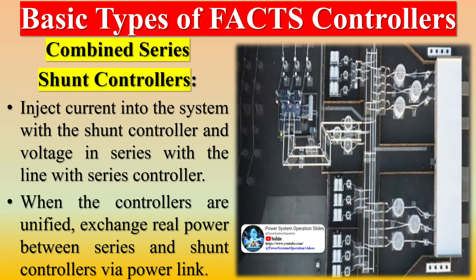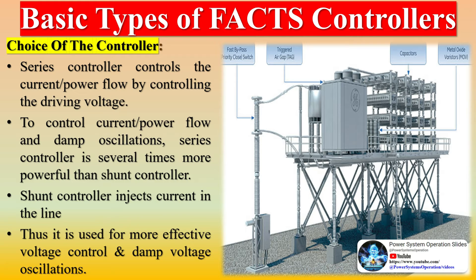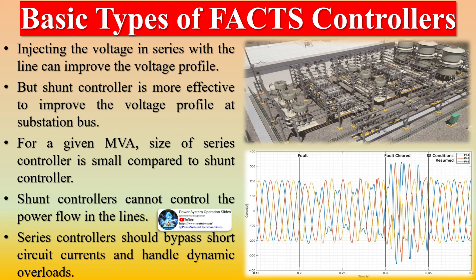In the choice of controller: a series controller controls the current and power flow by controlling the driving voltage. To control current, power flow, and damp oscillations, a series controller is several times more powerful than a shunt controller. A shunt controller injects current in the line and is used for more effective voltage control and damping voltage oscillations. Injecting voltage in series with the line can improve the voltage profile, but a shunt controller is more effective to improve the voltage profile at the substation bus. For a given MVA size, a series controller is small compared to a shunt controller.